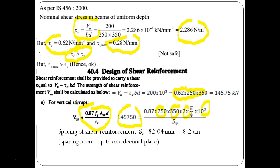So, spacing which is now again question setter has specified that the calculation should be done in terms of centimeter and that is up to 1 decimal place. So, from here we can say we are getting 8.2 centimeter as our spacing of shear reinforcement.